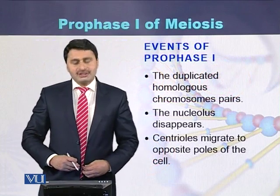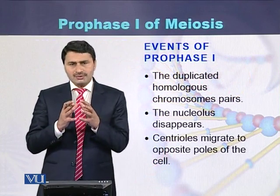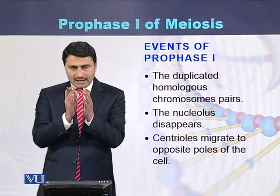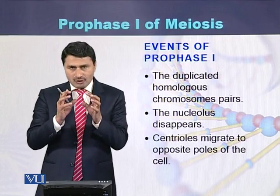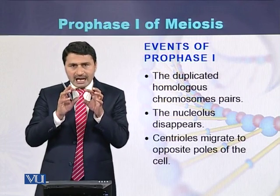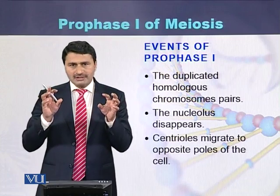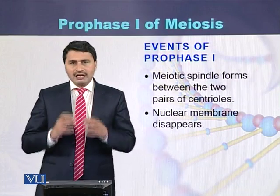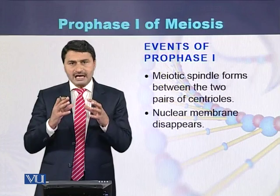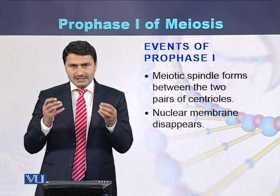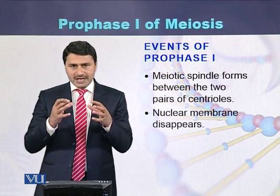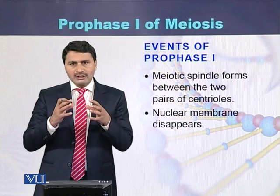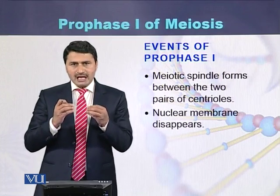The key events of Prophase I are: duplicated chromosomes align with each other and form pairs; the nucleolus disappears from the cell; centrioles divide and move to the opposite poles of the cell; spindle fibers form, emitting from the centrioles and spreading within the cell; and the nuclear membrane dissolves and disappears.